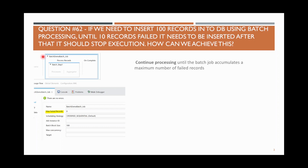This question is about batch processing. When you add a batch job, there is a property called 'maximum failed records'. If it is set to zero, even when records fail, the batch will still continue.